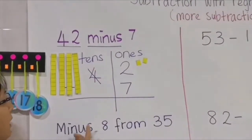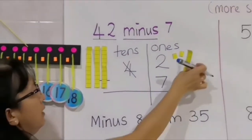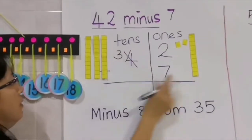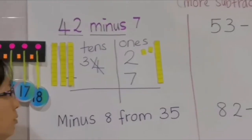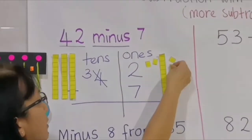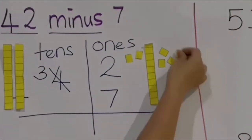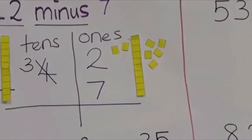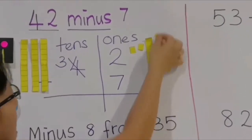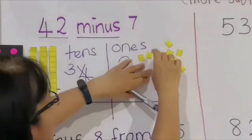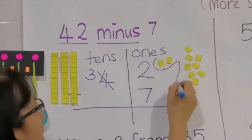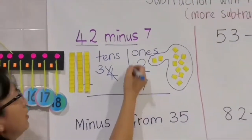We take 1 base-ten block from place value tens and give it to place value ones. So here there are 3 tens left. We already have 10 ones from that 1 ten we took. We change it into 10 individual ones: 1, 2, 3, 4, 5, 6, 7, 8, 9, 10. So we change it into 10 ones. When we combine it with the 2 ones already there, it becomes 12.